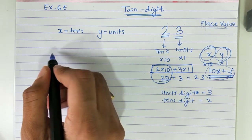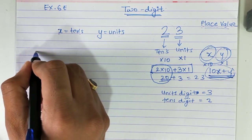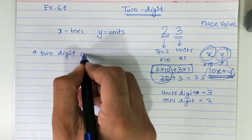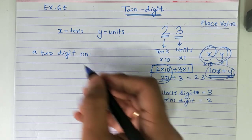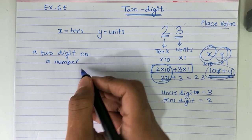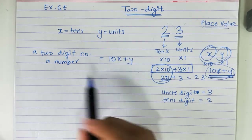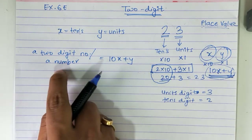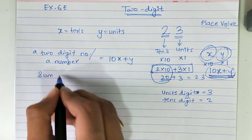So x is the tens digit. If they ask you about a two-digit number, or they simply say 'a number' or 'a certain number', the two-digit number is represented as 10x plus y.